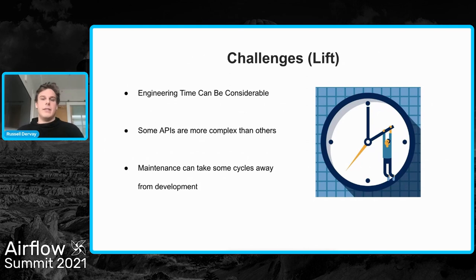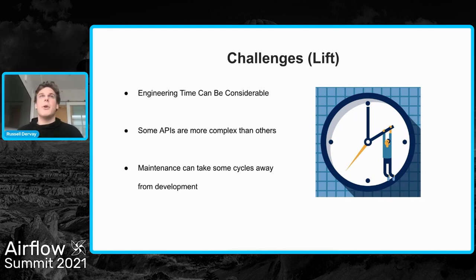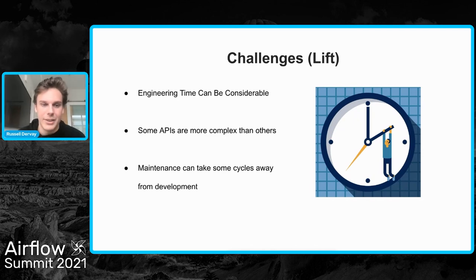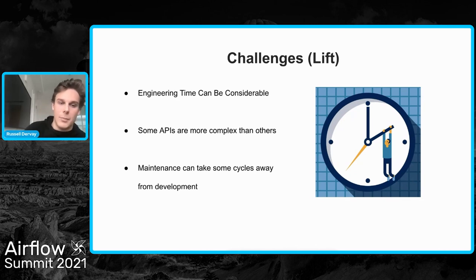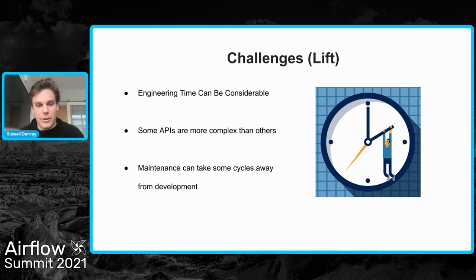The last challenge is lift. I want to give a nod to a lot of the reverse ETL companies out there like Census — if you don't have the time to build out individual operators or connectors, they have predefined packages. For us, we wanted to control it internally, but with that, APIs can vary and change over time. You have to make sure you're up to date with any changes an application makes to their API. Because of that, maintenance can take away several cycles from development — you might spend a week modifying different operators to connect properly to your end application.